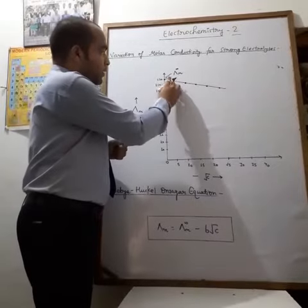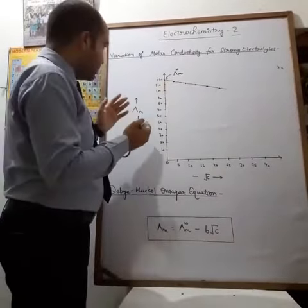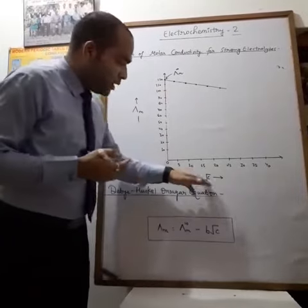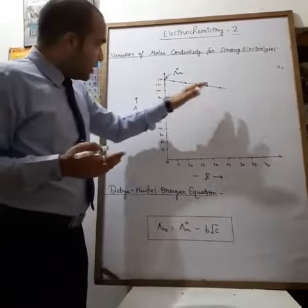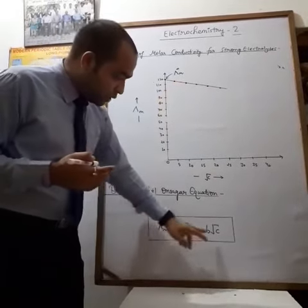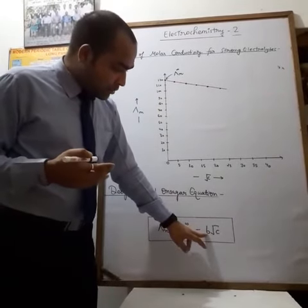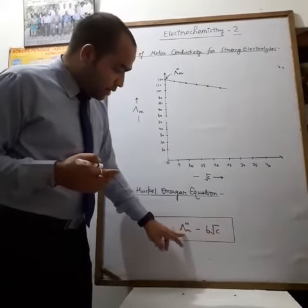λM and √C, and that will be a straight line. This shows that the equation is correct because this is an equation of the form Y = Mx + C, where Y = λM, M = -B, X = √C, and C = λM∞. If we extrapolate the curve